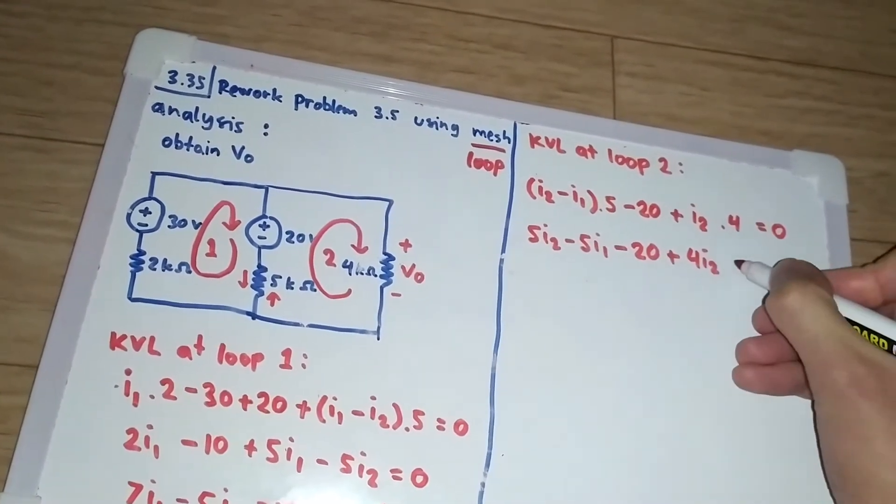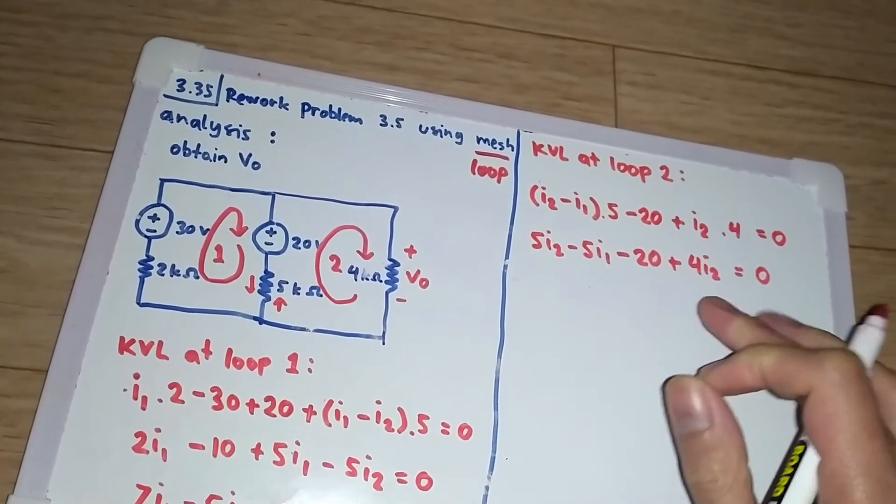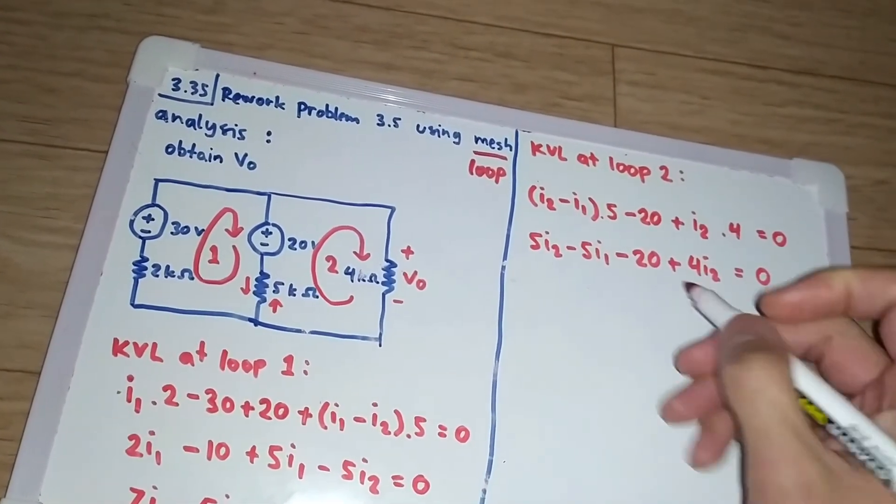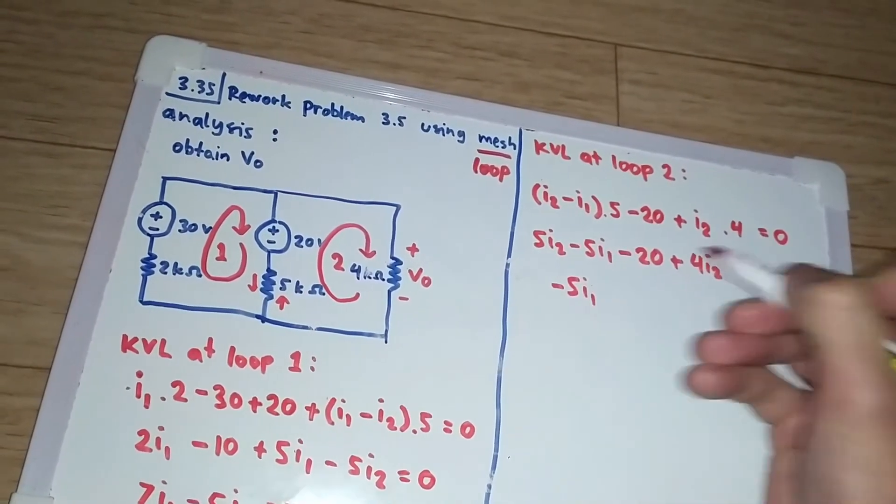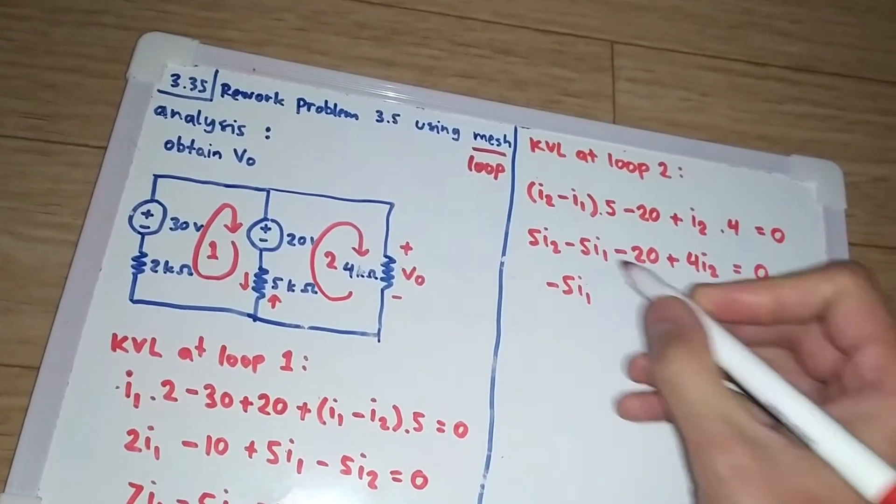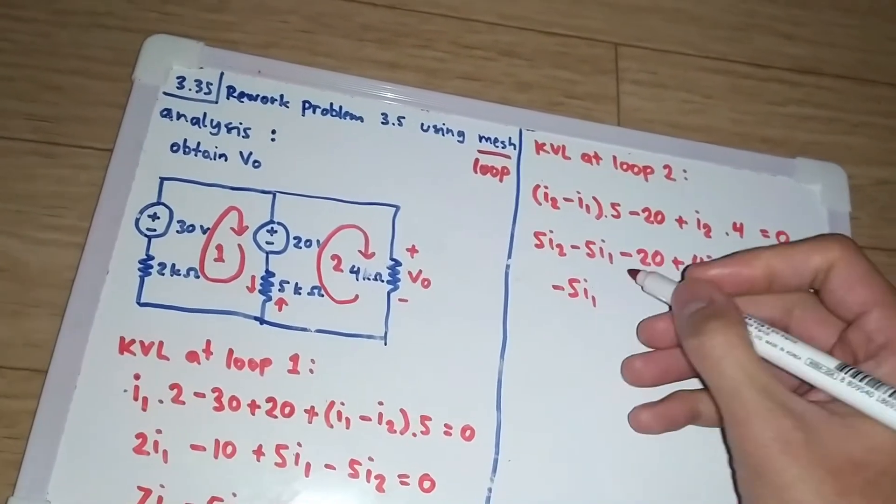We can simplify this equation: 5 I2 minus 5 I1 minus 20 plus 4 I2 equals 0.